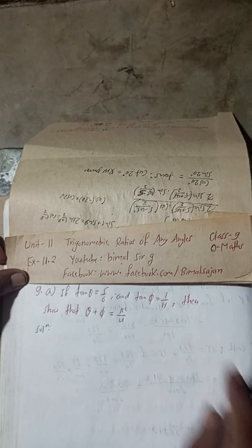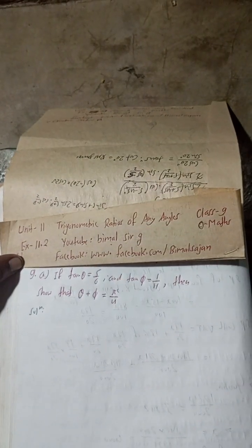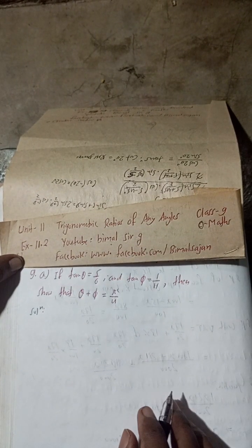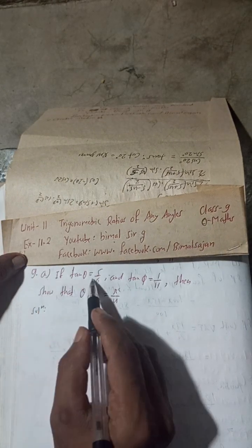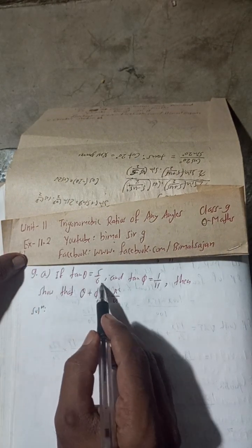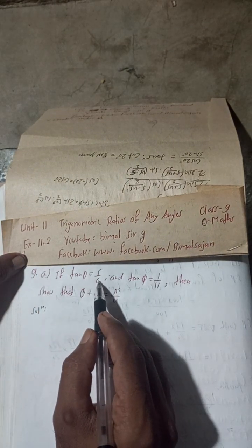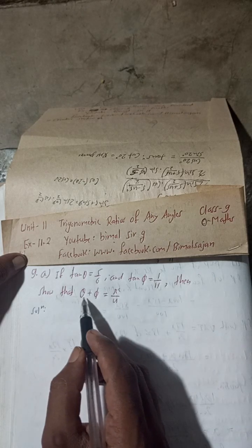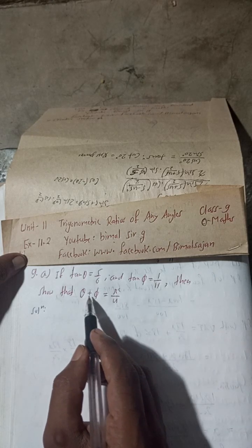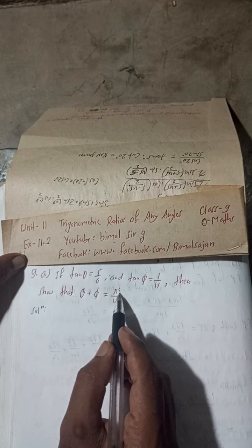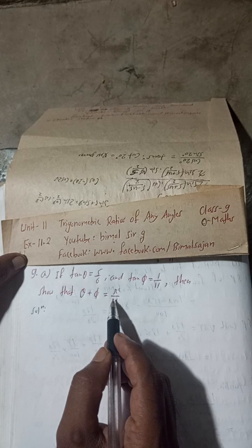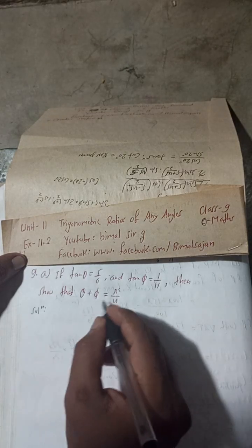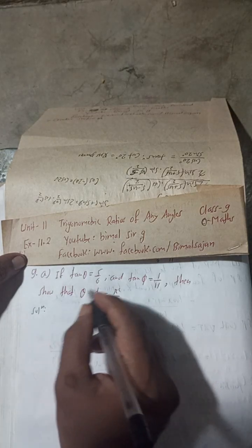I am sharing my knowledge, so you do the same. Let's begin the solution. Question 9a: if tan θ is equal to 5/6 and tan φ is equal to 1/11, then show that θ + φ is equal to π/4 radians.